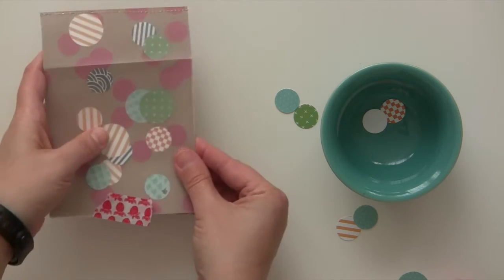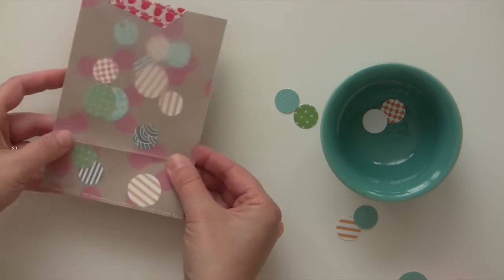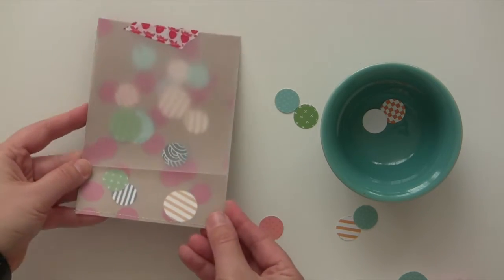Just put a little piece of washi tape there to hold it down and then hold the sides when you take it over to the sewing machine. Just like that.